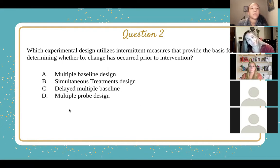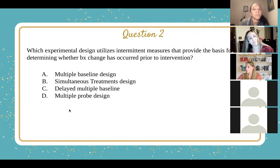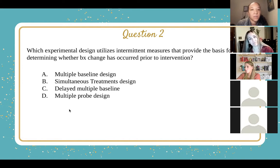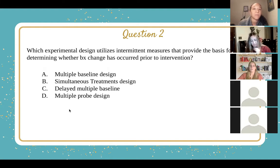Multiple probe is when the data points are not connected on the graph — you're just going to see dots that are not connected. That means they're not doing it on a consistent basis, but are just sporadically probing to make sure the intervention is still necessary. That's different from multiple baseline design, where you're doing multiple baselines at the same time and intervening at the same time.